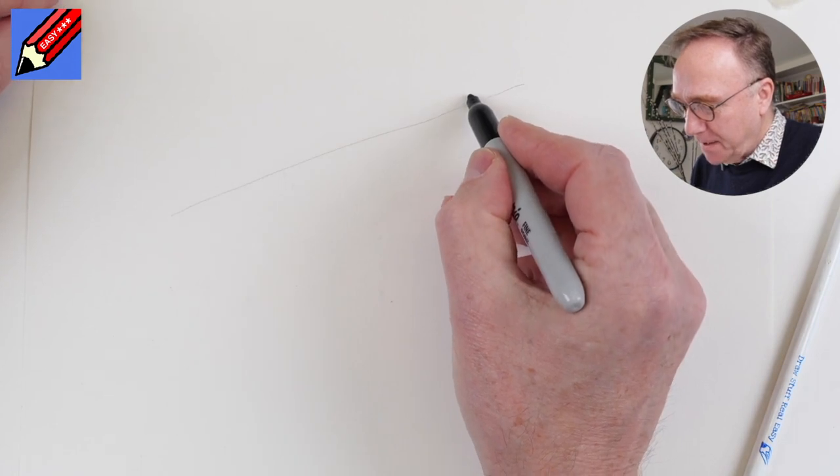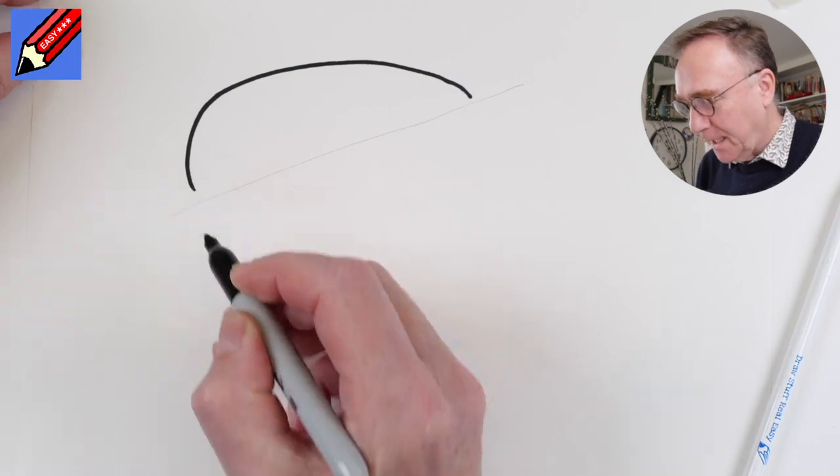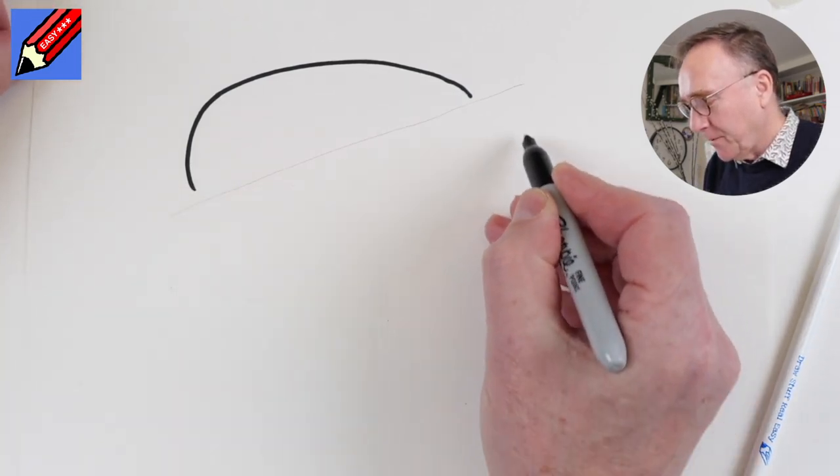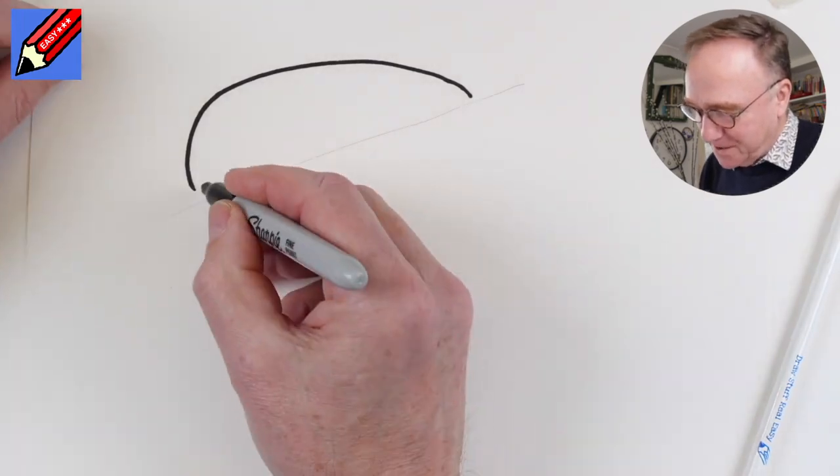So let's start by drawing the bit that is flat on the table and if you can imagine that would come all the way around like that if it was just a normal clock, but we're going to fold it over the edge.